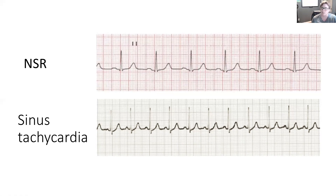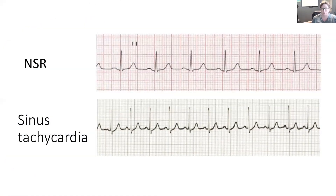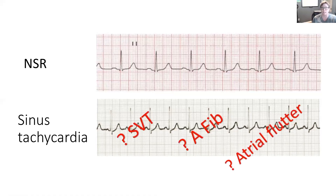This also applies to sinus bradycardia: in sinus tachycardia the QT interval will be very short, so don't forget to calculate your corrected QT value. We still need to complete our eight steps because this could be SVT, atrial fibrillation, or atrial flutter that we're simply not able to distinguish — so we must do our measurements.